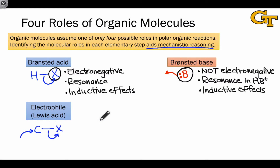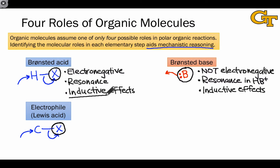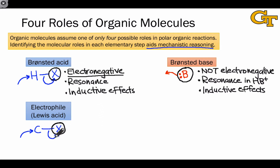Notice that the only difference between the Bronsted case and the Lewis case is the nature of the atom accepting electrons. So we can reason about both by focusing our attention on X, the ultimate electron acceptor. In both cases, we want X to be affected by inductive withdrawing effects, to experience resonance stabilization once X takes on a pair of electrons, and to be an electronegative atom. This suggests the molecule is likely to act as a Bronsted acid or Lewis acid, depending on what X is connected to.